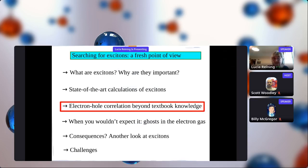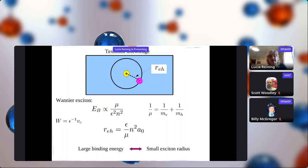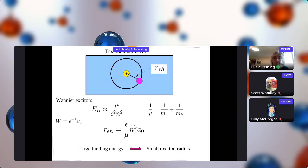All this is quite textbook-like. We have many textbook models for excitons, in particular the Wannier exciton - really a hydrogen-like object with only modified parameters. You have a positive and negative charge at some electron-hole distance. The binding energy goes with the effective mass built from the electron and hole masses, and the interaction is screened by the medium - the dielectric constant in the denominator. The distance is proportional to screening. So a large binding energy goes in general with a small exciton radius. This is our textbook knowledge.